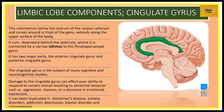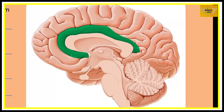The first part of the limbic lobe we look at is the cingulate gyrus. The green colored area here is the cingulate gyrus. Here is the corpus callosum, the genu of the corpus callosum, and here is the rostrum. This structure begins below the rostrum of the corpus callosum, curves around in front of the genu, extends along the upper surface of the body, moves down towards the splenium, and from there continues as the parahippocampal gyrus, joined by the isthmus.